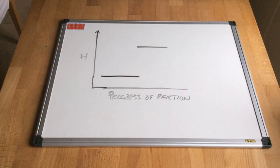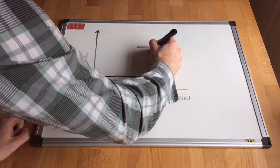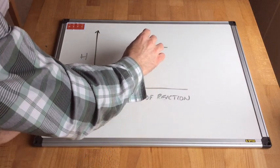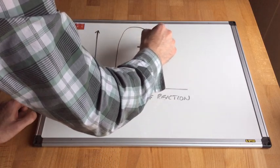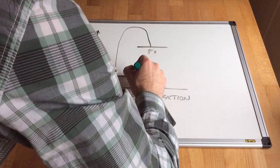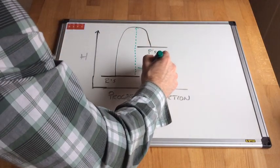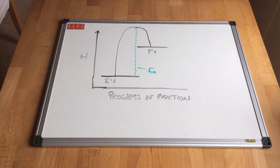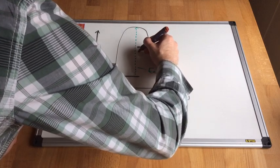Finally, let's look at an enthalpy profile diagram showing activation energy for an endothermic reaction. For endothermic reactions the reactants have a lower enthalpy content than the products, and we still have to overcome an energy barrier — the curve rises and then comes down to the products line. The activation energy runs all the way from the reactants level up to the peak. The enthalpy change for endothermic reactions is positive, shown as an upward arrow between the two enthalpy lines.